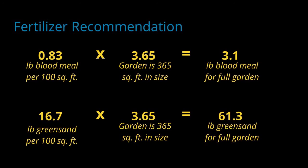We measured the garden space and estimated that it's about 365 square feet in area. That means that we need to apply approximately 3 pounds of blood meal and 61 pounds of green sand.